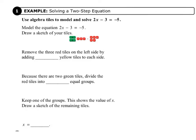Our next step is to remove the three red tiles on the left side by adding three yellow tiles to each side. I'll show you what that looks like, and then you can sketch that in your record and practice journal.